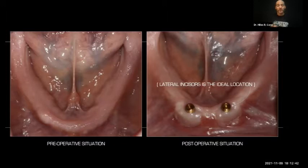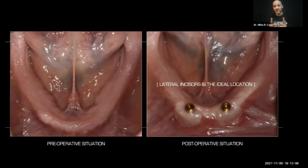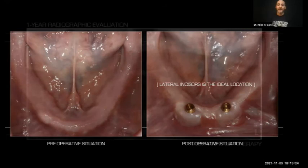We put two implants in the lateral incisor region. A lot of people try to go to the canine region — don't do that. Most implant overdentures are implant retained but still tissue supported. I still need the flange of that mandibular denture to go back and sit on the heels of the ridge at the retromolar pad. So I want the implants as far anterior as possible to distribute that force all the way across.